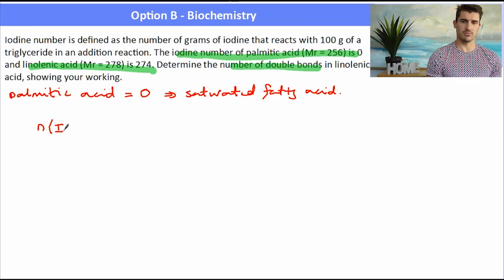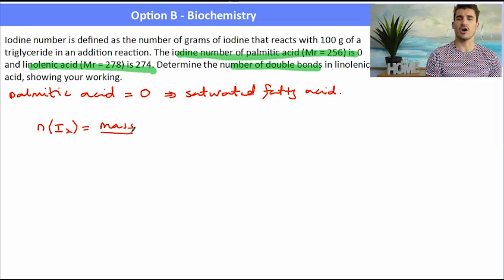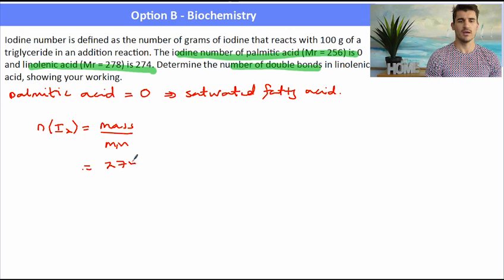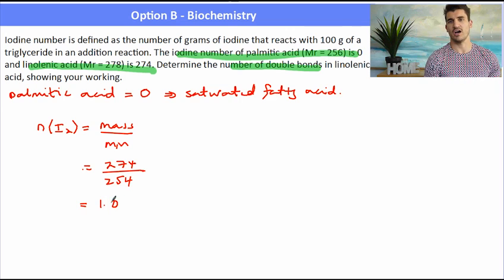To determine the number of double bonds in linoleic acid, the first thing we need to do is work out the number of moles of I2 that it reacted with. So we can do the mass which is the iodine number 274 divided by the molar mass which is 254, giving us the number of moles of iodine that reacted with all of the fatty acid.